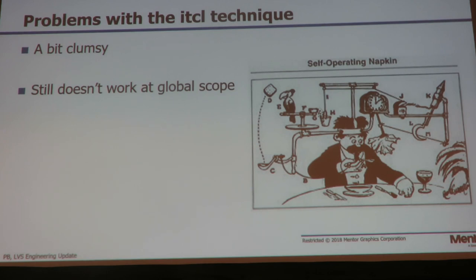It's kind of a Rube Goldberg thing — you set up a bowling pin, tie a string to it, then tie the string to the trigger that opens the railroad track. There are a lot of moving pieces. It doesn't really seem like a nicely constructed system, but it does work, except at global scope.